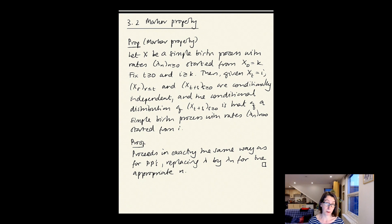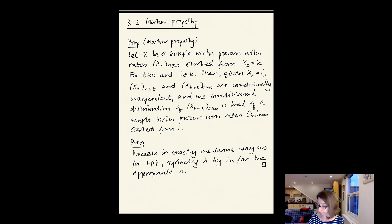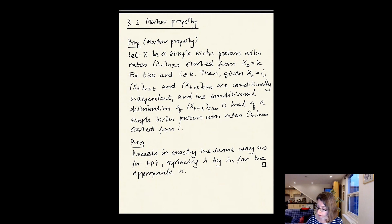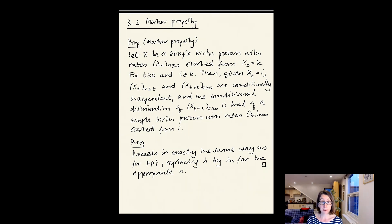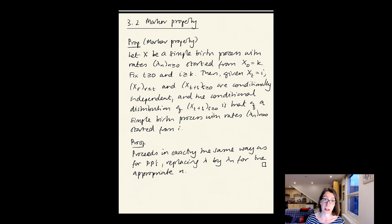Let's now turn to the Markov property for a birth process. In the same way as for the Poisson process, a Markov property holds for birth processes in general, for much the same reason. Let x be a simple birth process with rates lambda_n for n ≥ 0, started from x_0 = k. Fixing a time t and a state i ≥ k, given that x_t = i, the process up until time t and the process from time t onwards are conditionally independent, and the conditional distribution of the process from time t onwards is that of a simple birth process with the same rates but started from i. The proof proceeds exactly as for Poisson processes, replacing lambda by lambda_n for the appropriate n.